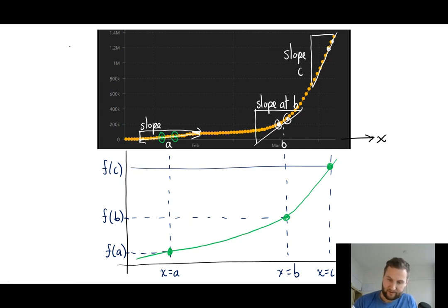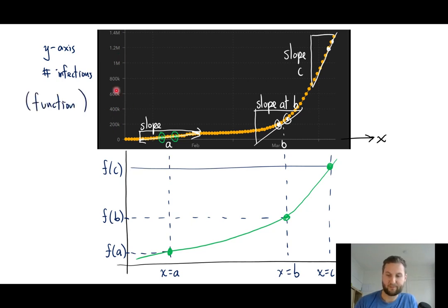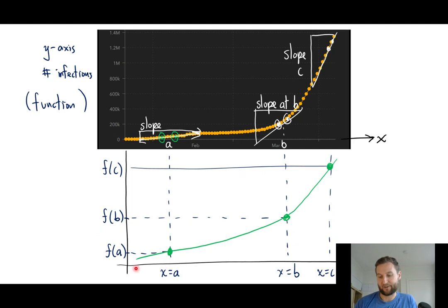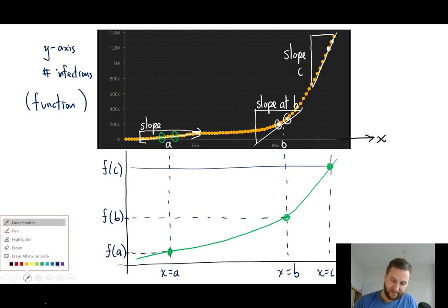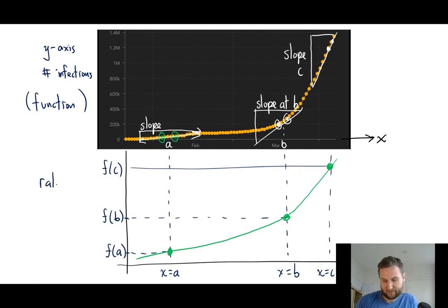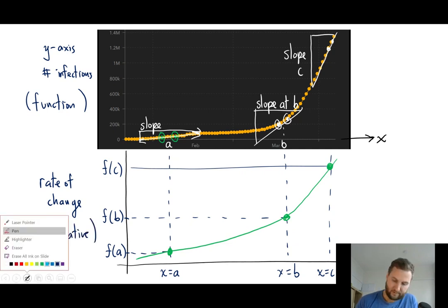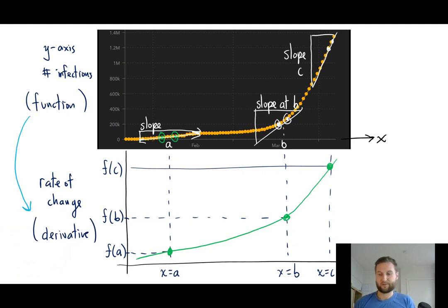Keep in mind the original data on my y-axis was tracking number of infections, but this new function's y-axis represents slope values — f at A, f at B, f at C were all slope values. So this no longer matches my original graph. Even though the time axis is the same along x, the vertical axis now represents the slopes or the rate of change. These are different functions, different graphs. These values represent a rate of change, and we now call this the gradient function or the derivative function. We've transitioned from a function to a derivative.